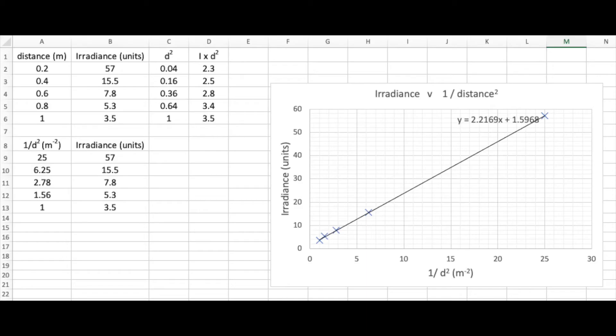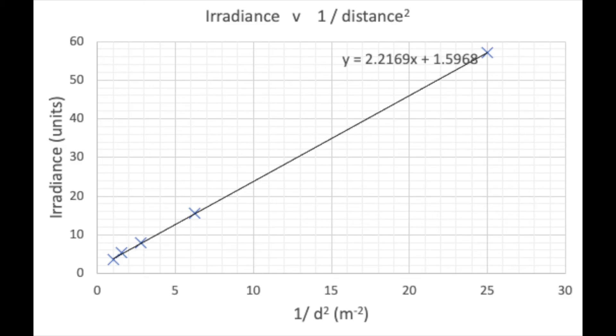So I've put all my results into a spreadsheet, and I'm going to plot a graph of irradiance on the y-axis, 1 over d squared on the x-axis. And we get a straight line with a positive gradient of 2.2, but it doesn't quite go through the origin. It's a linear relationship, but there's a y-intercept of about 1.6. And that points to our systematic uncertainty: all our irradiance measurements seem to be too high by about 1.6 units.